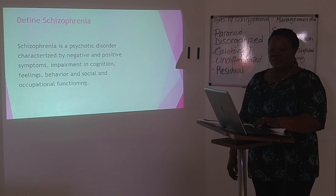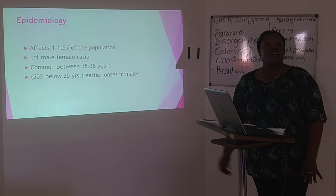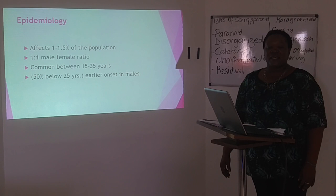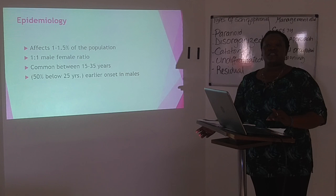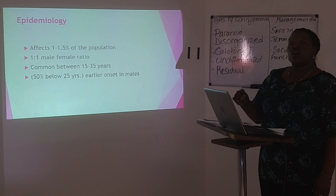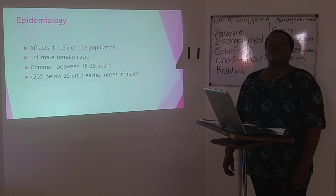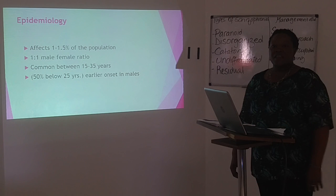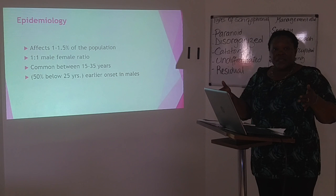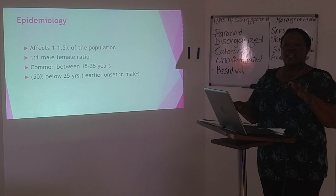When we look at epidemiology, we realize that schizophrenia affects 1 to 1.5% of the population. The male to female ratio is equal. However, according to diagnostic statistics, it commonly occurs between the ages of 15 to 35 years old, but it does occur earlier in terms of onset for males rather than females. When it gets to the defining age group of 15 to 35, we find that both male and female are at equal ratio.